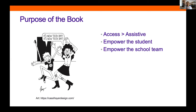Technology for blind and low vision students is different than for other students — it's not an option. Technology really facilitates information in ways that are not possible without it for many of our students. So the number one purpose of the book is the idea of shifting from assistive to access. By emphasizing the word 'access,' we are able to emphasize the role of technology for blind and low vision individuals: facilitating access to information.